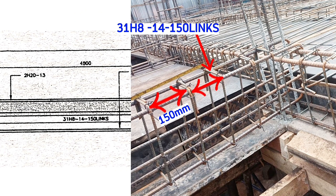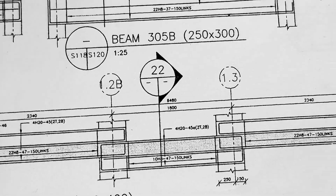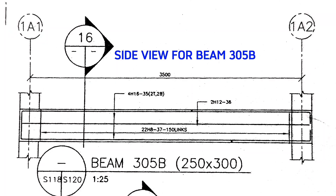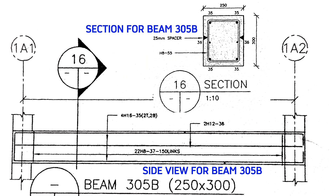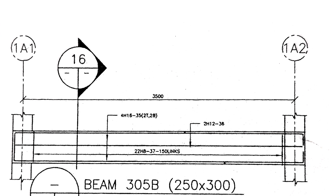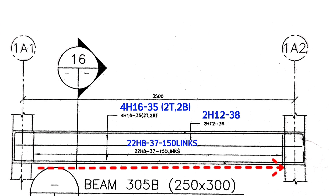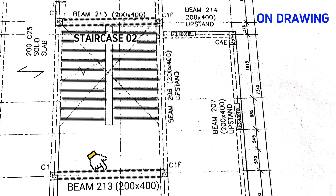For short beam 305B, starting from grid line 1A, the beam is 250 millimeters by 300 millimeters depth. Its section details four H16 Code 35 bars for both top and bottom, two H12 mid row bars, and 22 H8 links running along with a spacing of 150 millimeters.